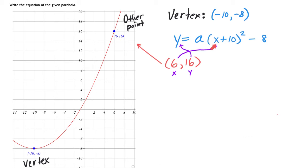Then we'll substitute those values into the different letters that you see there and write a new equation. So it says 16 equals a times 6 plus 10 squared minus 8.